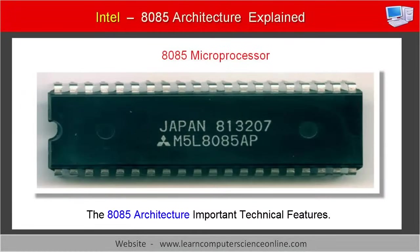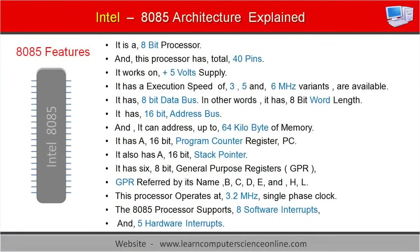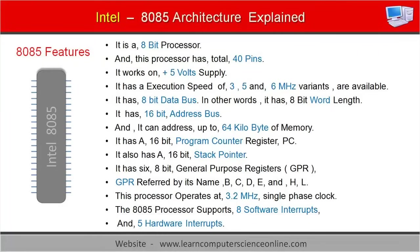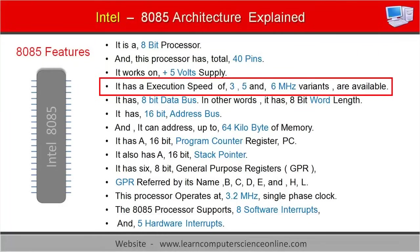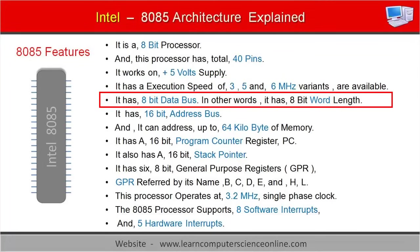Let us now take a quick look at some important technical features of the 8085 microprocessor. It is an 8-bit processor with a total of 40 pins. It works on a plus 5 volt supply. It has execution speed variants of 3, 5, and 6 megahertz. It has an 8-bit data bus, which means it has an 8-bit word length.